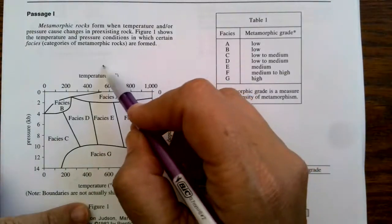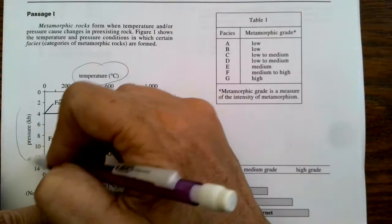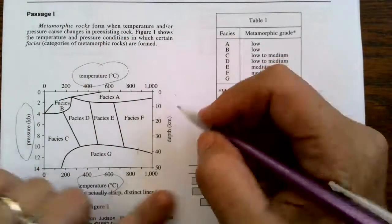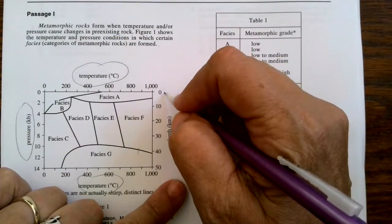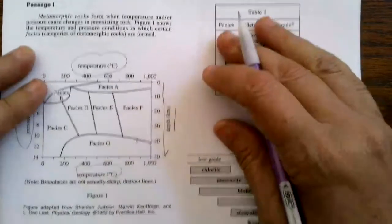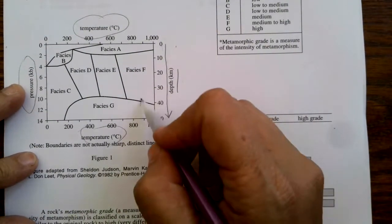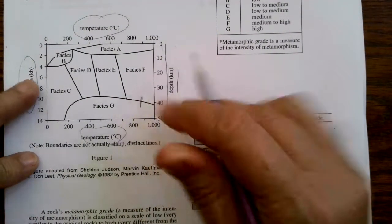Okay, so there's temperature on the horizontal and then pressure's over here. But this is not pressure, this is depth, and it's going down, so it's like thinking underground. Note: boundaries are not actually sharp distinct lines, so there's going to be some crossover here a little bit probably.